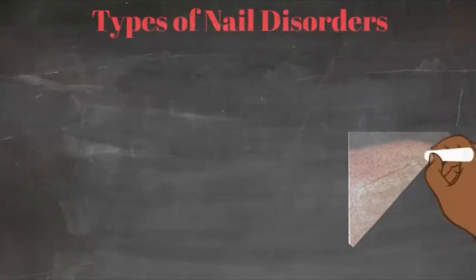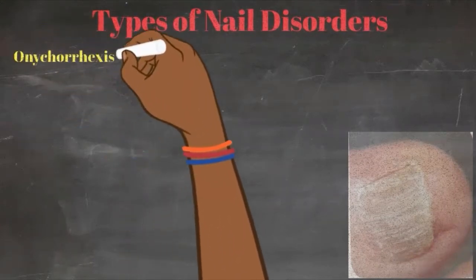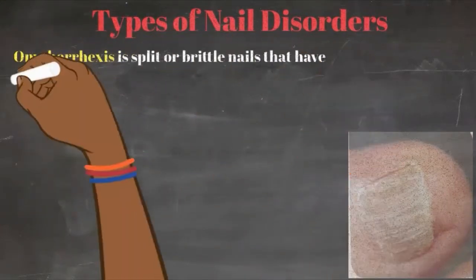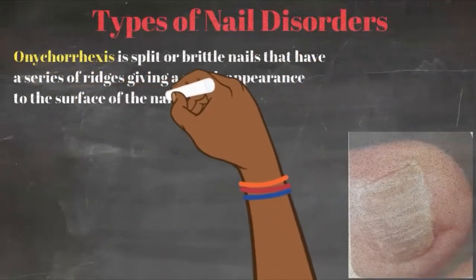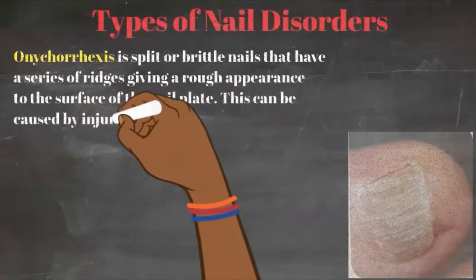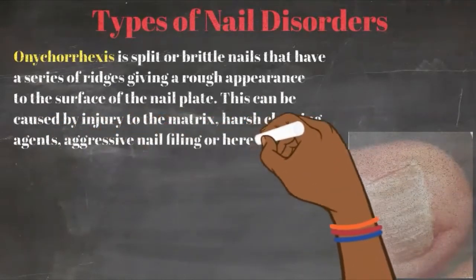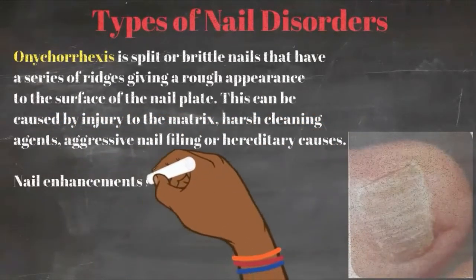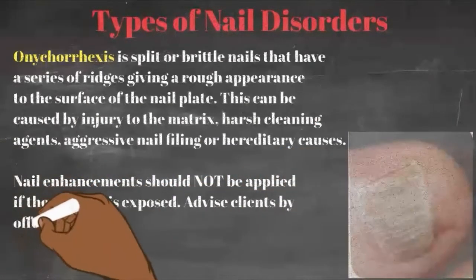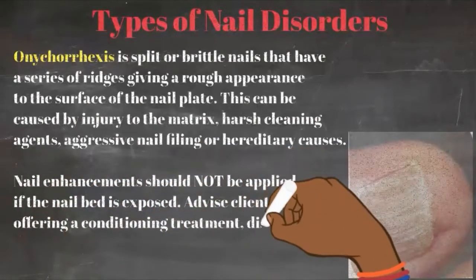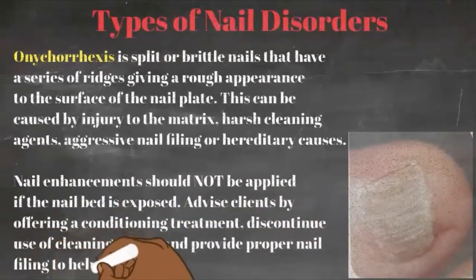Next up, we have onychorrhexis. This is a split or brittle nail that has a series of ridges, giving it a rough appearance on the surface of the nail. This can be caused by injury to the matrix, harsh cleaning products, aggressive nail filing, or hereditary causes. Nail enhancements should not be applied if the nail bed is exposed. Advise your clients by offering some type of conditioning treatment and moisturization, discontinue use of cleaning agents, and try to do proper nail filing to help them out.